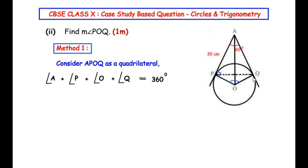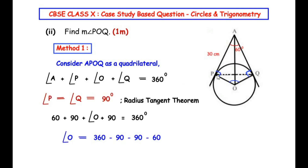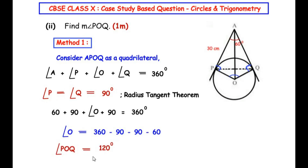Similarly, AQ is a tangent and OQ is a radius, so by the radius-tangent theorem, OQ is perpendicular to AQ, meaning angle OQA equals 90 degrees. So angle P equals angle Q equals 90 degrees. Plugging in: 60 plus 90 plus angle O plus 90 equals 360. Taking the known angles to the right-hand side: angle POQ equals 360 minus 90 minus 90 minus 60 equals 120 degrees.